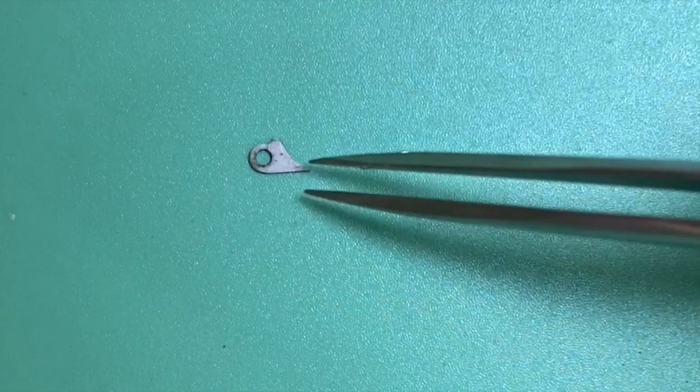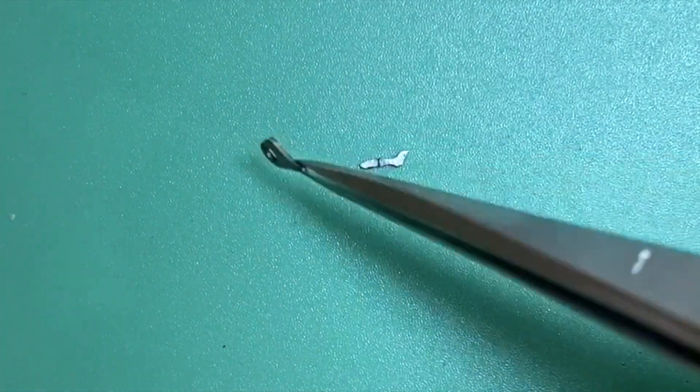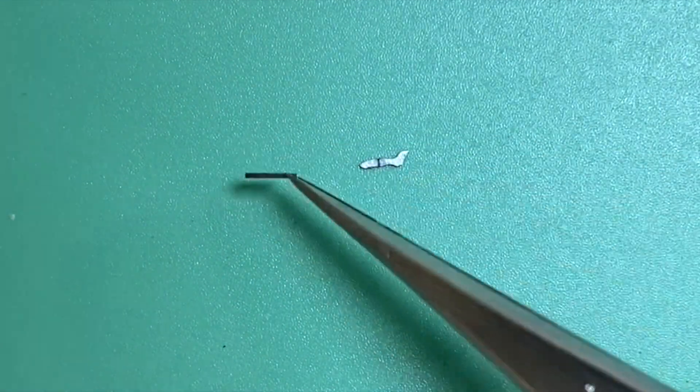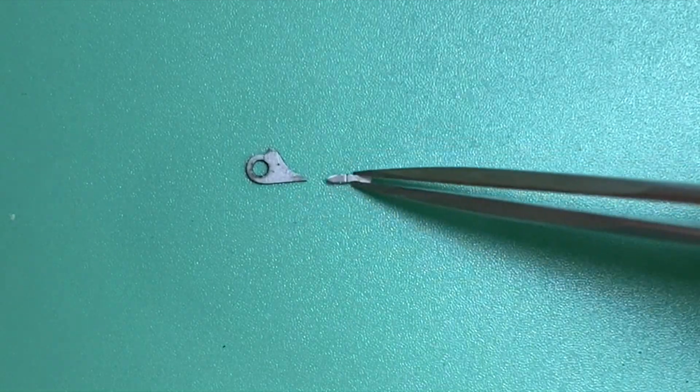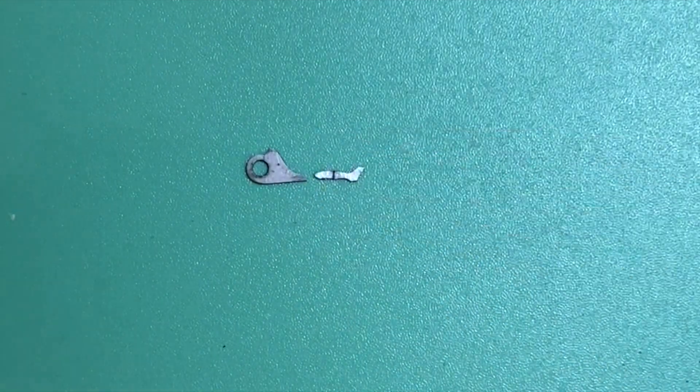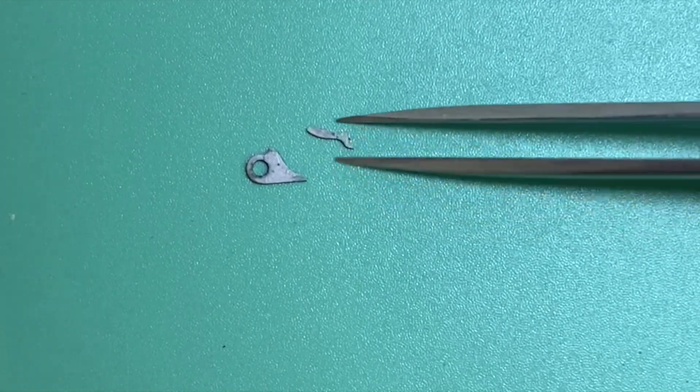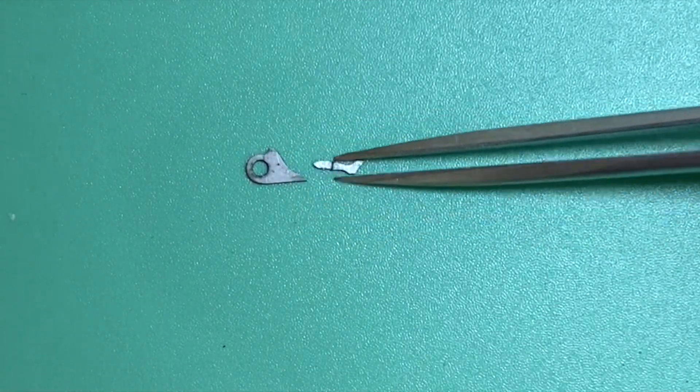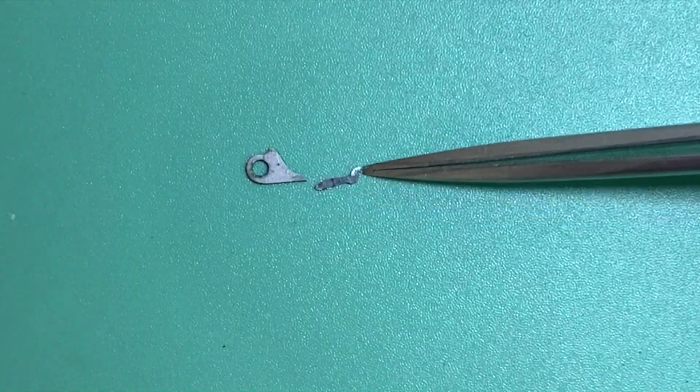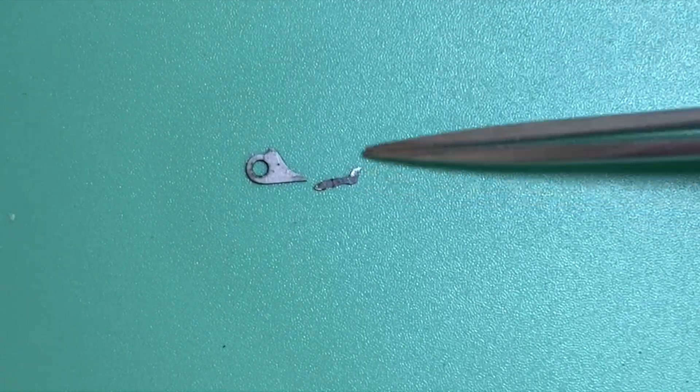So here is our culprit, our broken return bar that was in the watch. We can see that it's snapped here in the middle. Now the interesting thing about this is there is no real reason for this extra foot to be here.